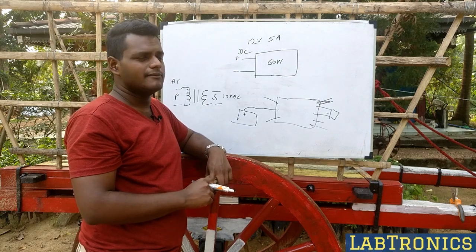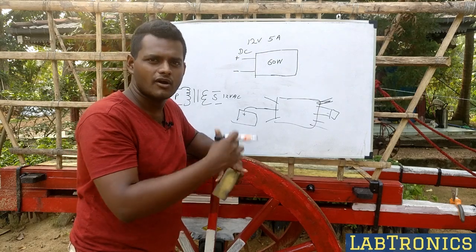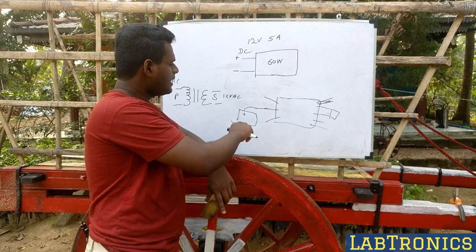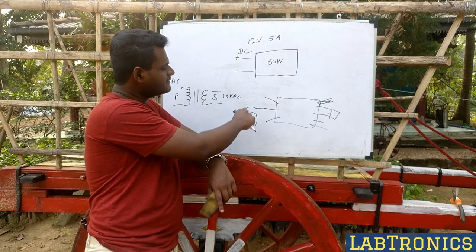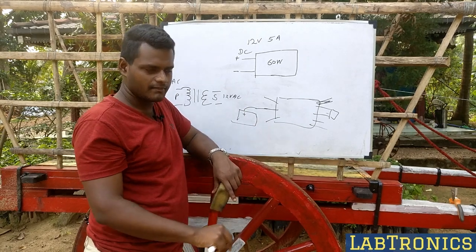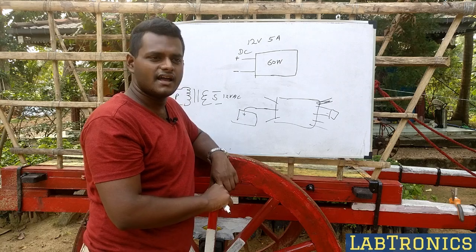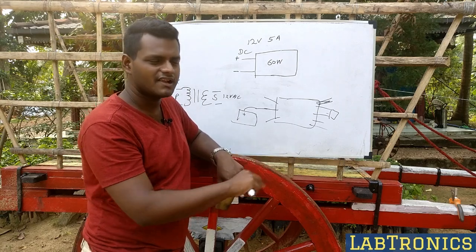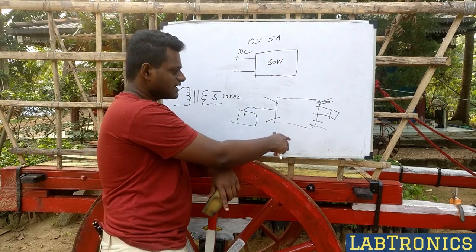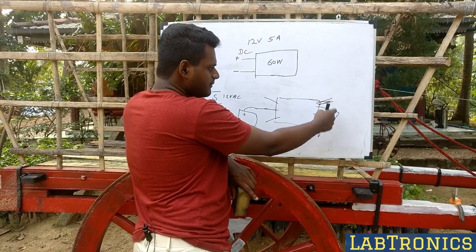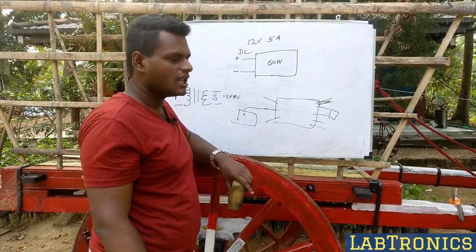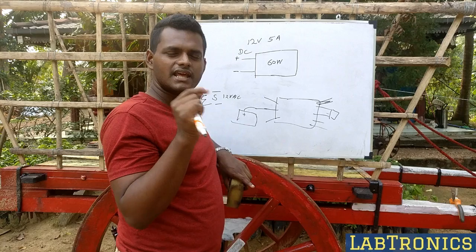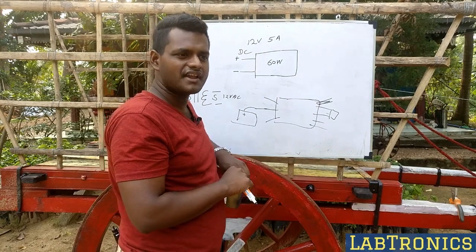We have to use a variable lab power supply. We also have to use voltage and voltage, as well as MCB. Now we have to use the wire. This wire is done with the wire hatter.